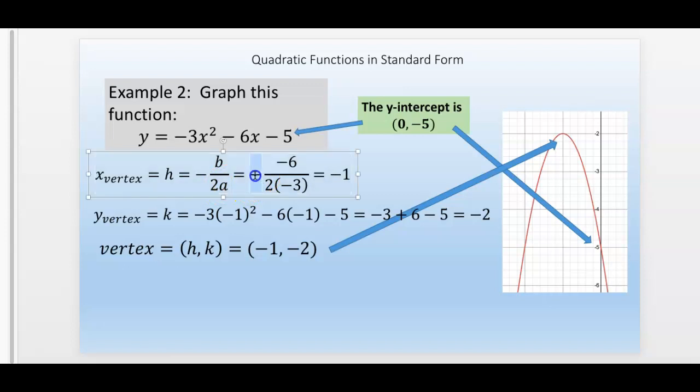There's a negative up top and there's a negative on the bottom. Three negatives make a negative.